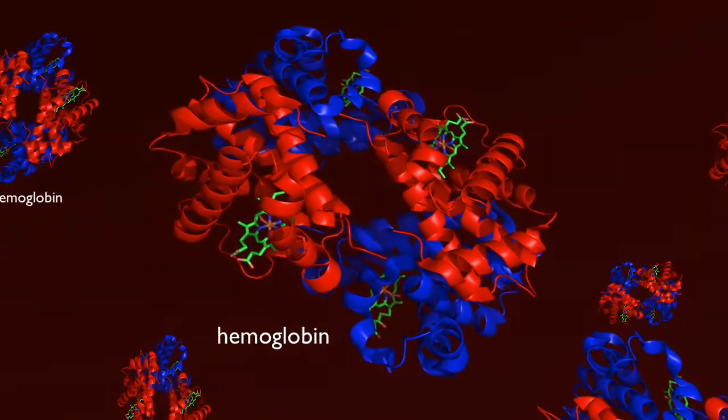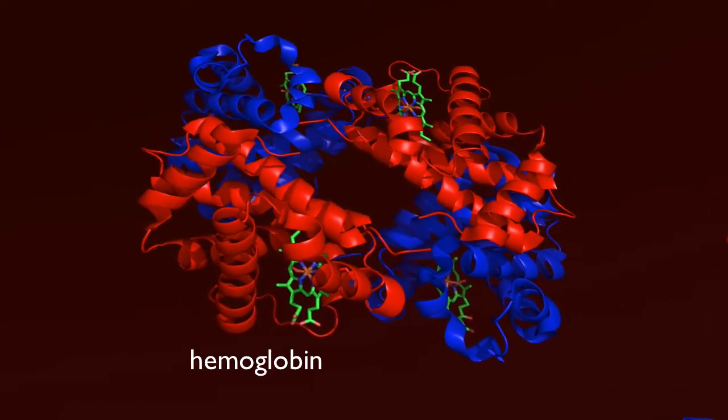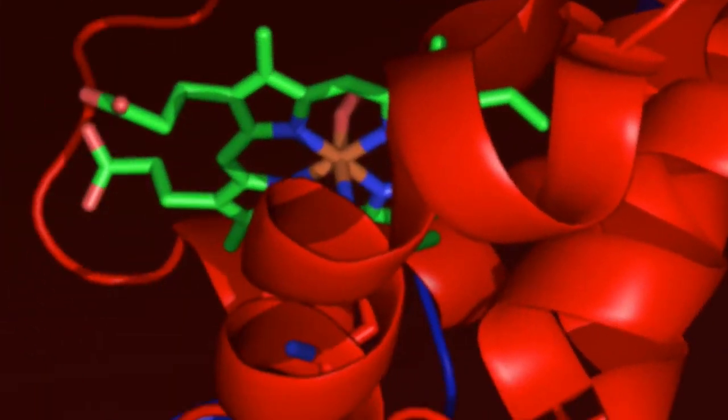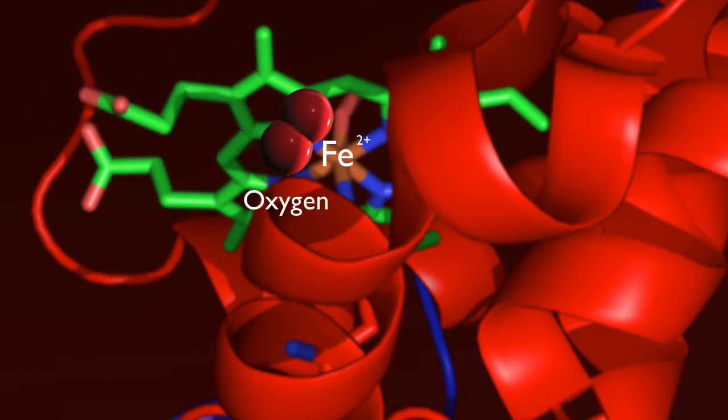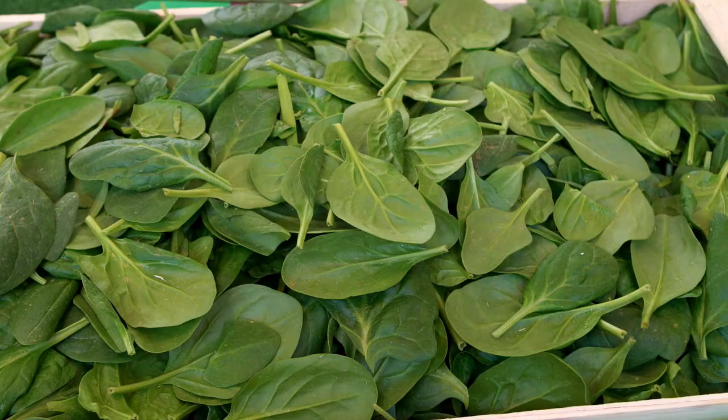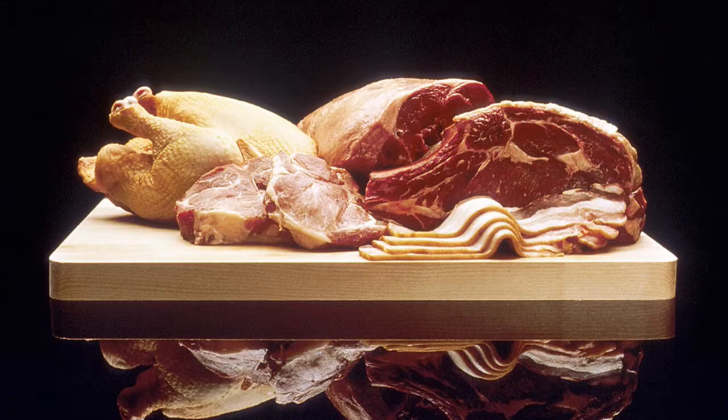Each hemoglobin molecule is made up of four subunits. Each subunit includes an iron atom that binds to an oxygen molecule. This is why you have to be sure that your diet includes enough iron. Iron is found in foods such as spinach, beans, meat, and dried apricots.